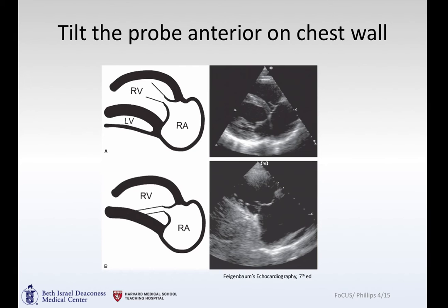As an excursion from what we were doing last time: when you're on the parasternal long axis view, you can tilt your probe down — bringing the tail down towards the left shoulder. As you do that, your scanning fan moves more anterior and you open up the right ventricle and right atrium. Tipping even further, you completely lose the left ventricle and you're now fully anterior with your right atrium, right ventricle, and tricuspid valve.